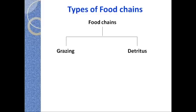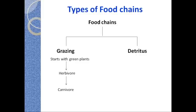Now let us discuss the types of food chains. In any ecosystem we may have two different types: grazing food chains and detritus food chains. Grazing food chains start with green plants — all food chains which start with green plants are called grazing food chains. The energy from green plants is transferred to herbivores, and from herbivores the energy gets transferred to carnivores. This is the sequence of energy flow in a grazing food chain.